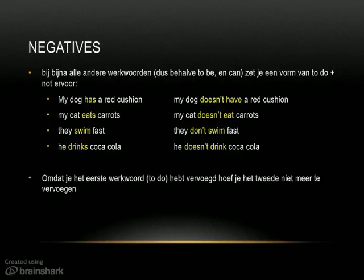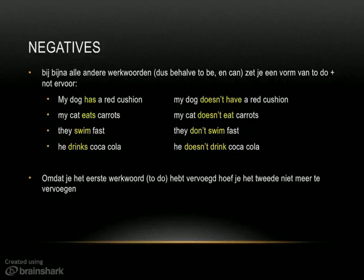So if you don't see the verb to be or the verb can in the sentence, then you have to use a form of the verb to do, plus not, to make it negative. That is almost all other verbs - except to be and can, you use the verb to do.